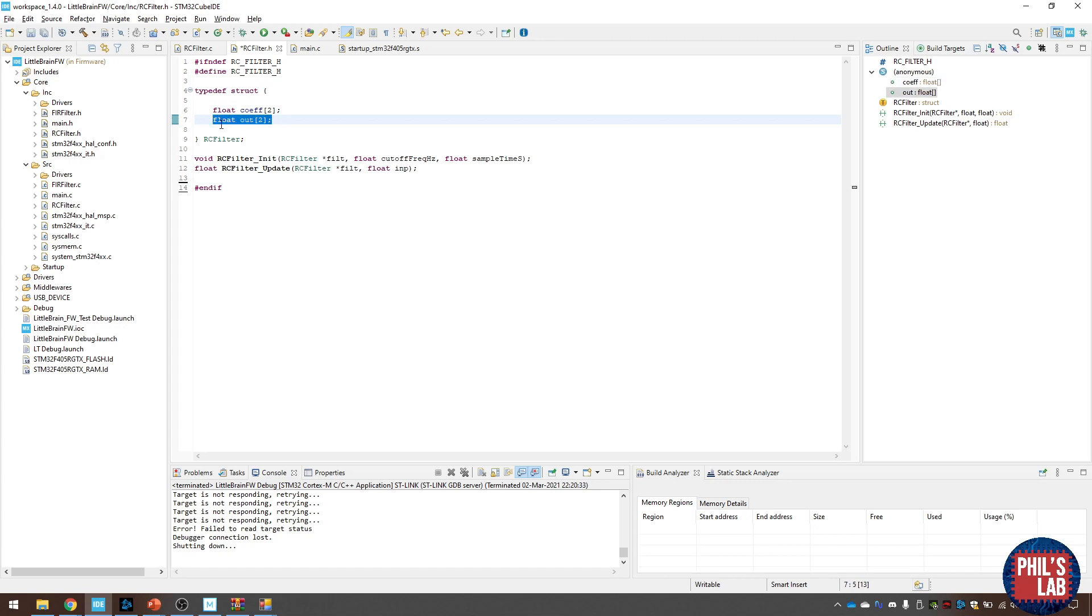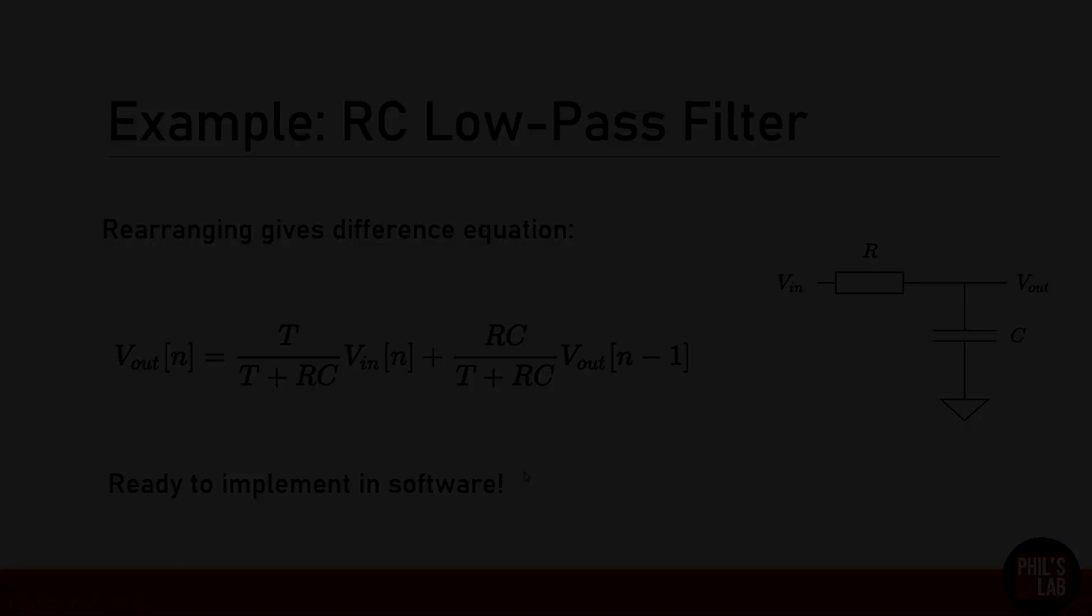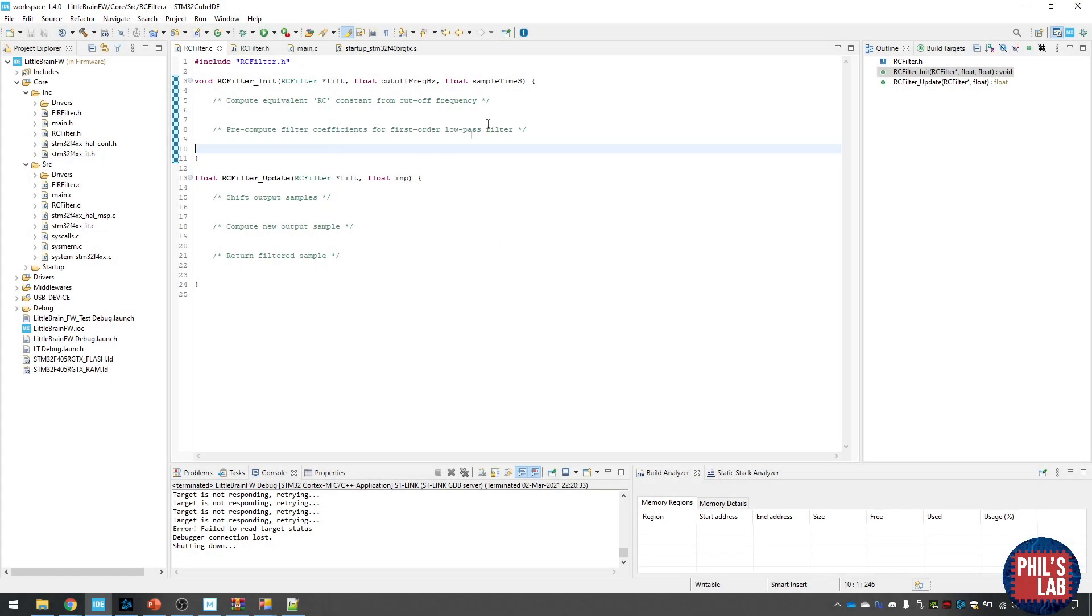Now, if we look back at the RC filter difference equation, remember we have two coefficients, essentially. We have two constants. We have T over T plus RC, which is our first coefficient, and we have RC over T plus RC, which is our second coefficient. We can pre-compute them and save them in the filter struct, and that will save us some computational time later on. Now here's the actual source file, and I've put in some comments and we're going to fill in the code together. So here's the initialization function, where we compute, for example, from the cutoff frequency, the RC constant, and we also pre-compute the filter coefficients, and then we have the update function. We have to shift the output samples, compute a new output sample, and then return that filtered output sample.